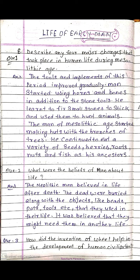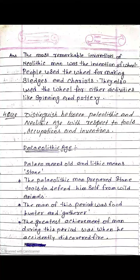How did the invention of the wheel help in the development of human civilization? The most remarkable invention of Neolithic man was the invention of the wheel. People used the wheel for making sleds and chariots. They also used the wheel for other activities like spinning and pottery.